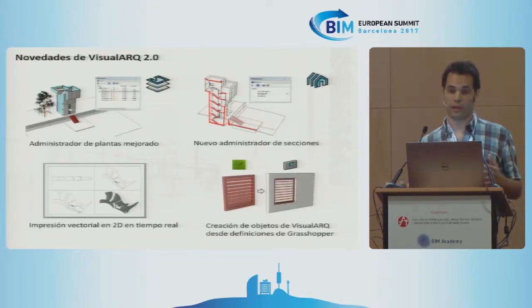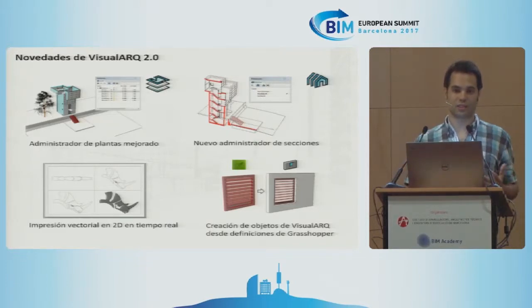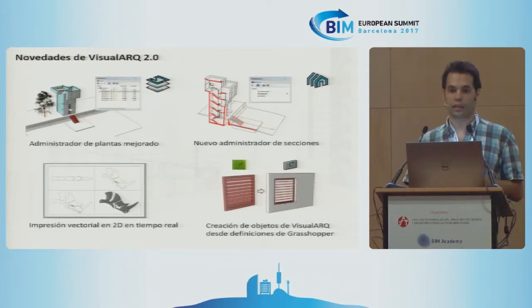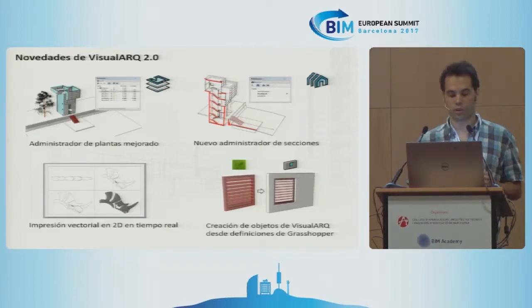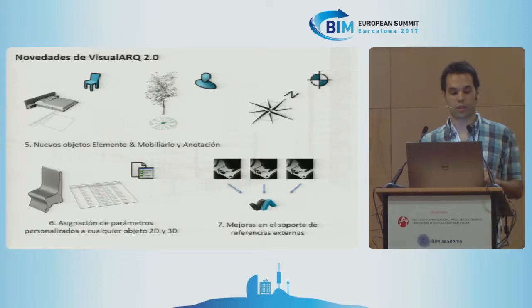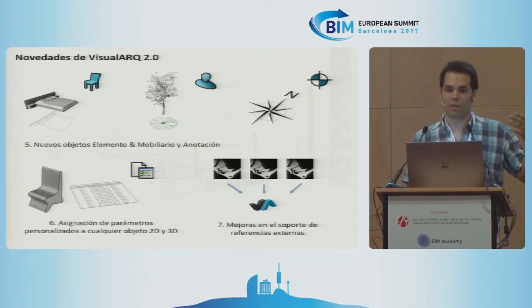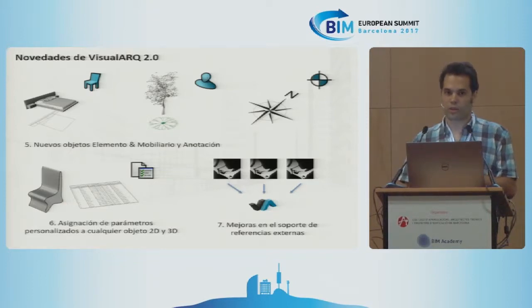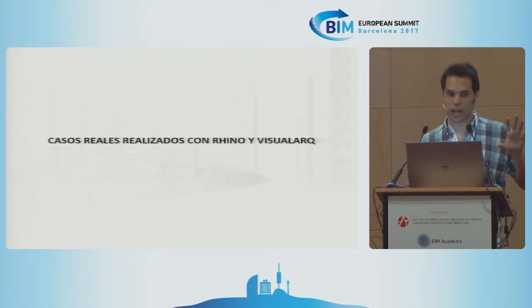I would like to highlight especially this new feature related to integration with Grasshopper: the ability to create architectural objects from Grasshopper, translating and transferring this flexibility through the dialogues of Visual Arc to make them more user-friendly, and to have a vast library of objects. We continuously add new objects, both in 3D and in 2D, and the possibility to add any kind of information to any object, and create new parameters such as price, provider, or technical transmission coefficient — anything you want.